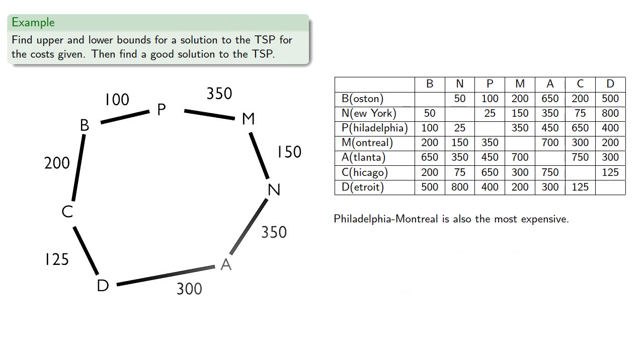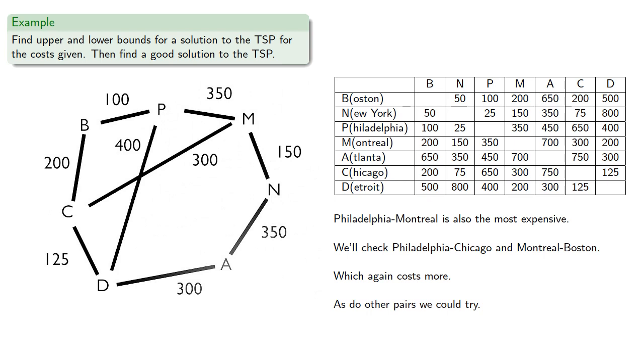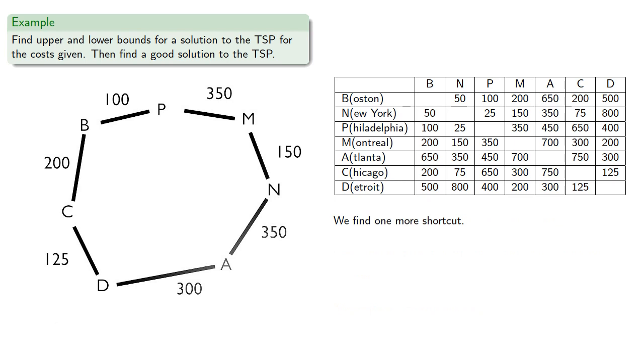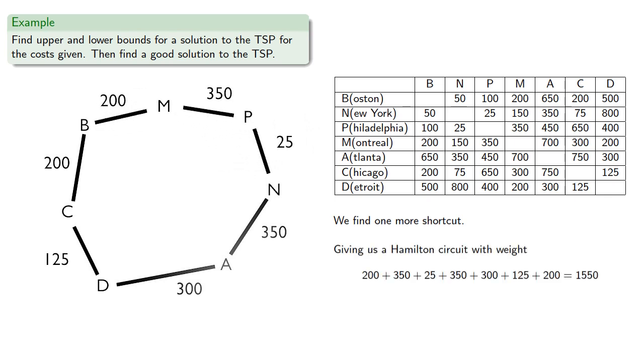This leaves Philadelphia-Montreal as the most expensive. We'll check Philadelphia-Chicago and Montreal-Boston, which again costs more, as do other pairs we could try. Though we do find one more shortcut, giving us a hamilton circuit with weight...